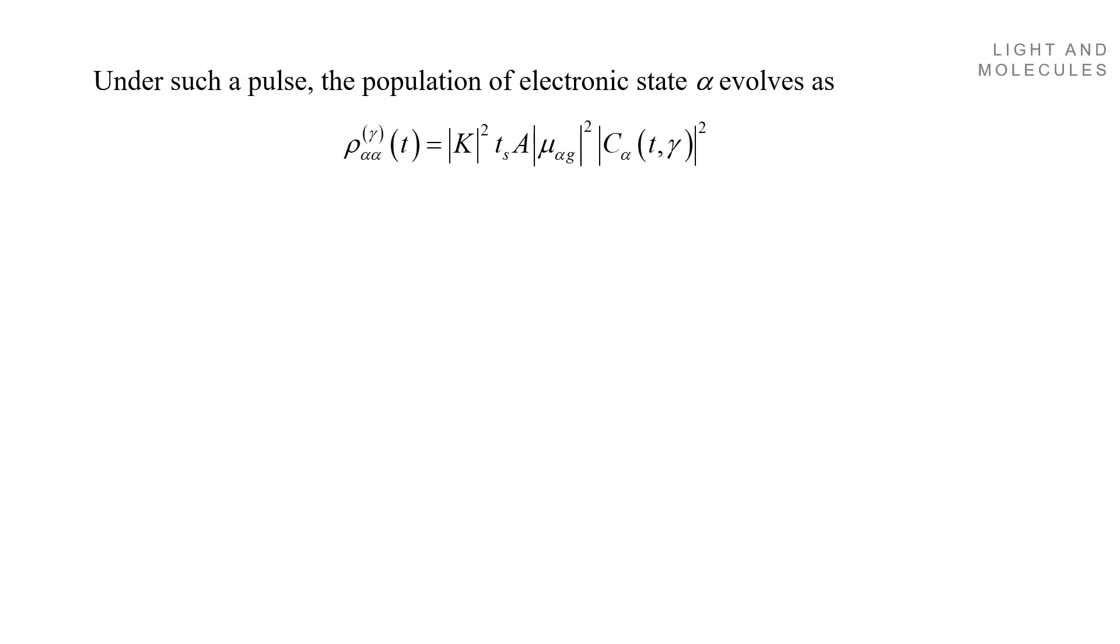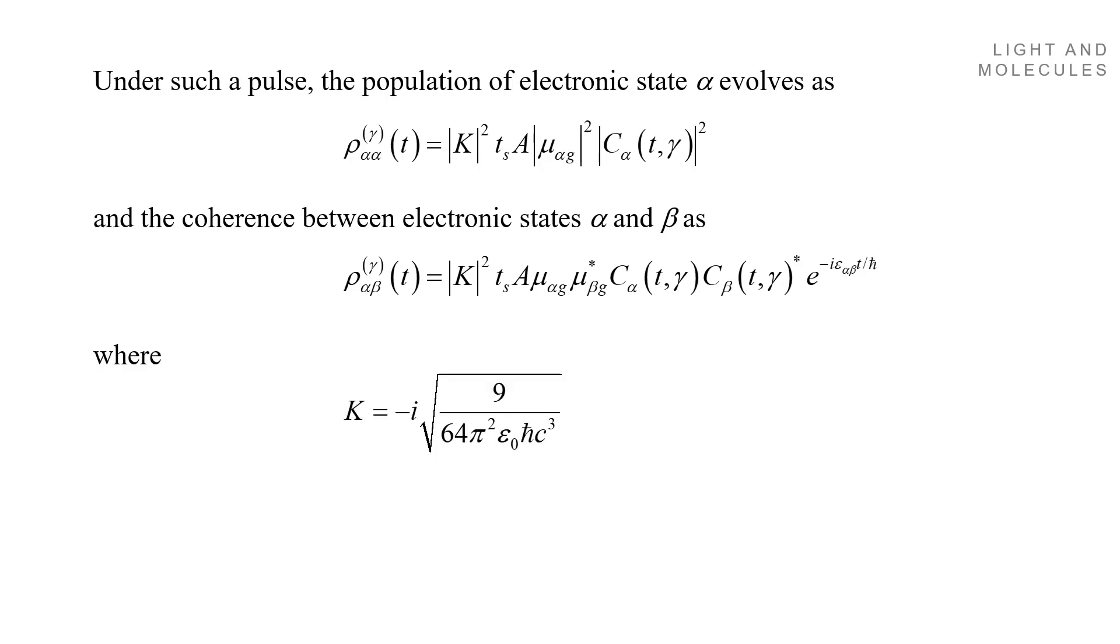Under such a pulse, the population of the electronic state alpha evolves according to this equation. And the coherence between two electronic states, alpha and beta, will be given by this other equation. And here you have K is just a constant. Mu alpha G is the transition dipole moment between the ground state and the alpha electronic state. And C, just wait for it.